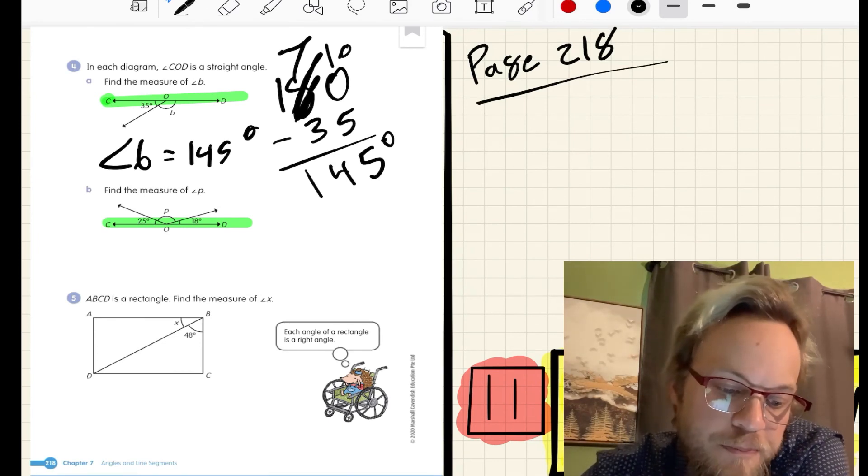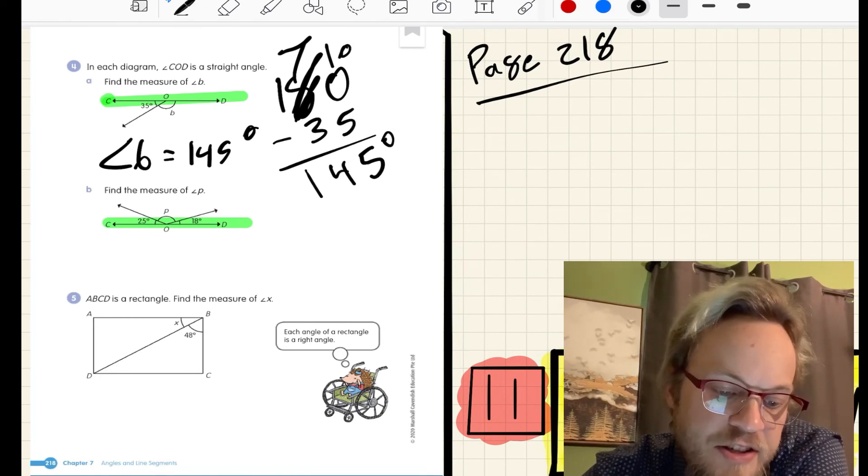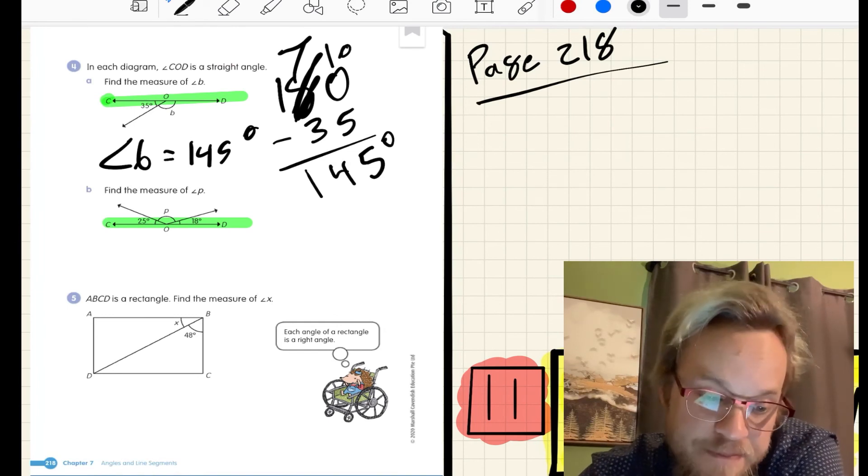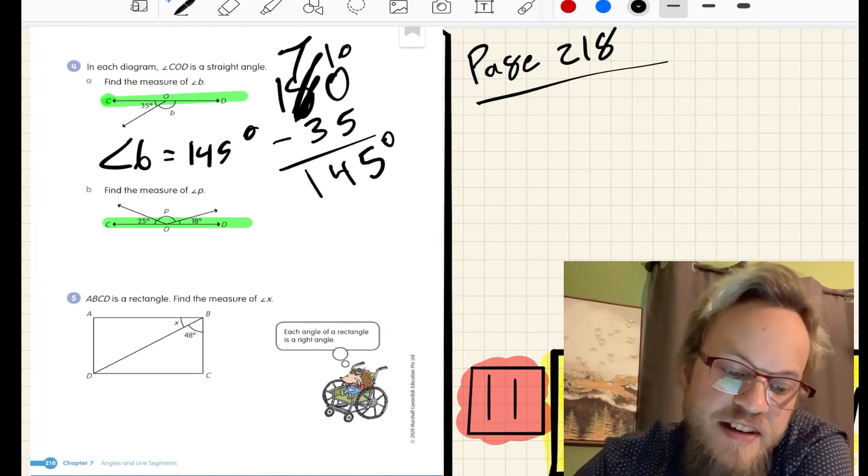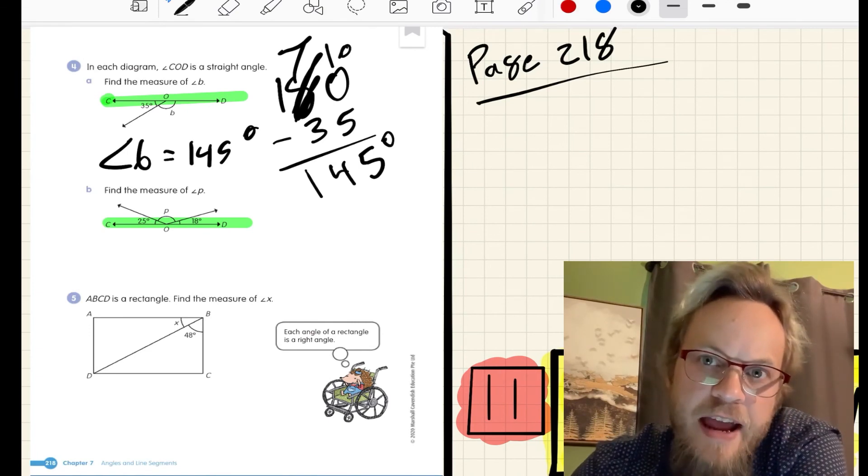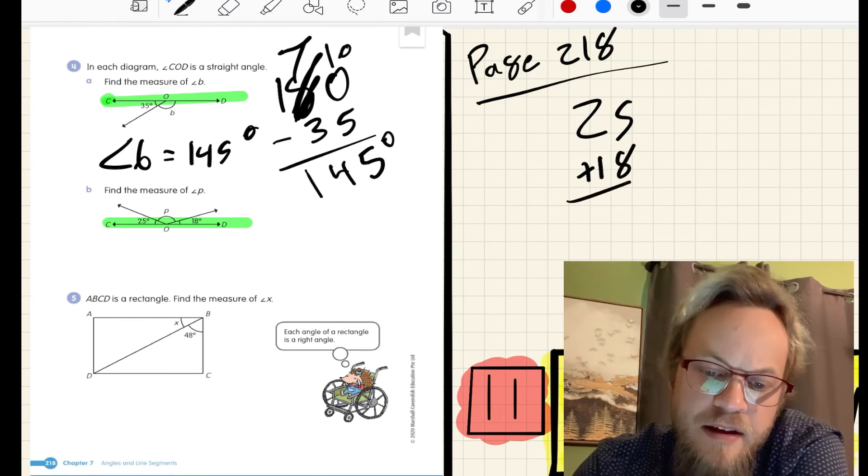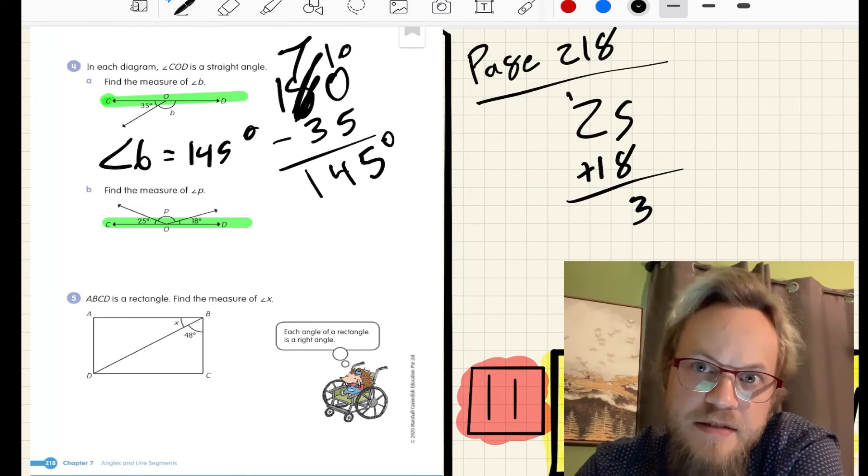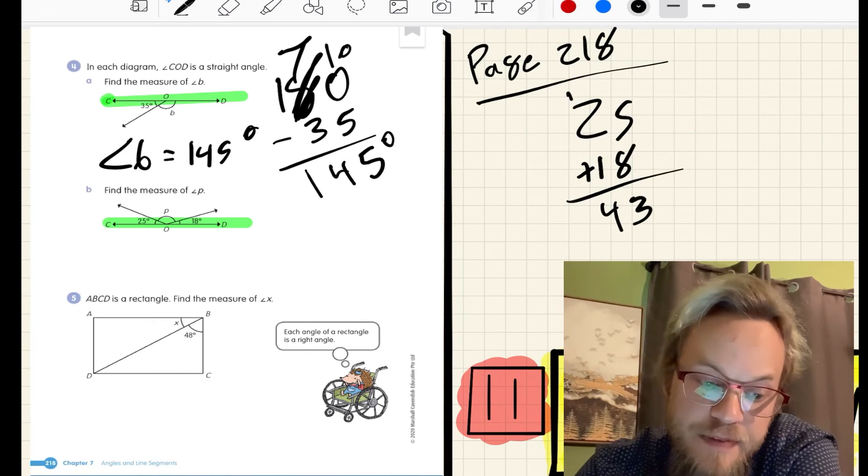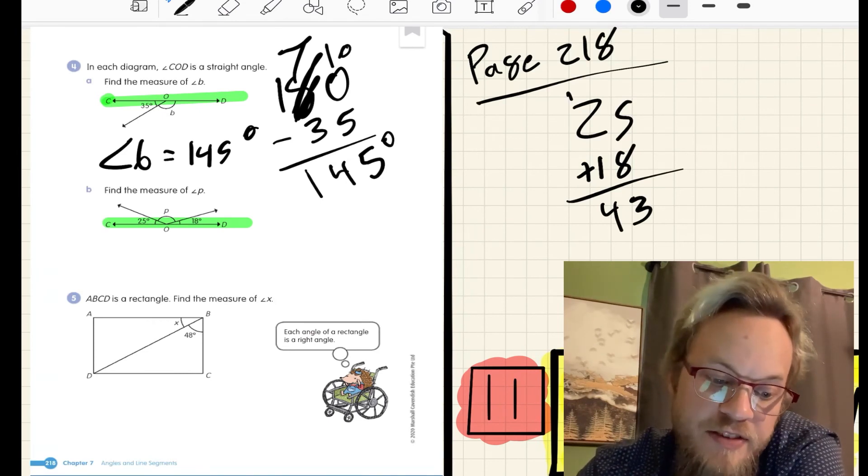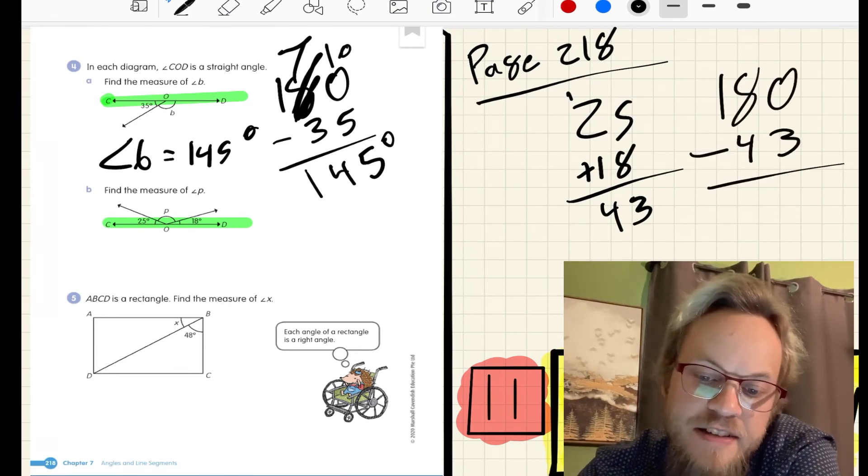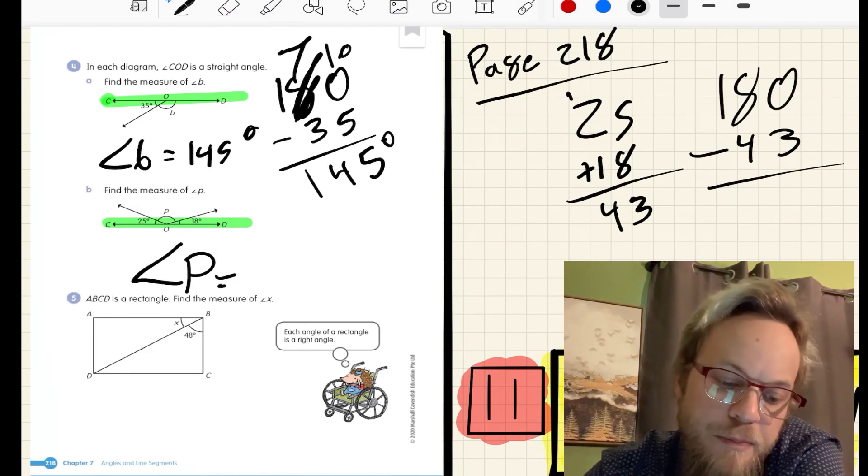For part B, C-O-D is 180 degrees. We know two parts and need to find out the missing part, P. Because we know two parts, we're subtracting 180 minus 25 plus 18. Add those up real quick. 25 plus 18. 5 plus 8 is 13. 10 plus 20 is 30, plus 10 is 40. So all together, those two are 43. And now, if I subtract 180 minus this 43, that will tell me what angle P is.